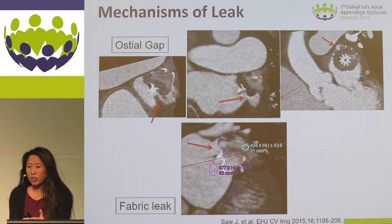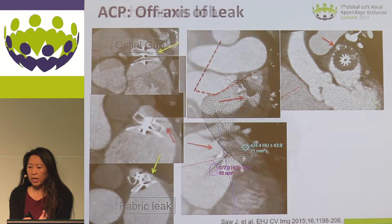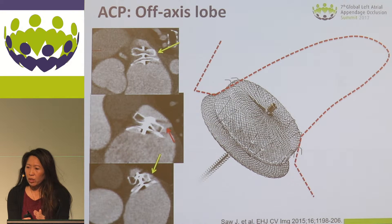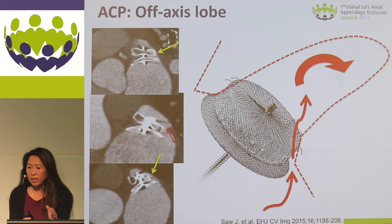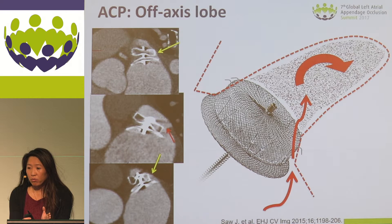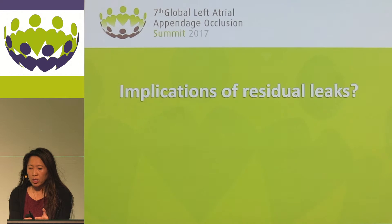With single-lobe devices like Watchman, typically the leaks are due to osteo-gaps. Very rarely, we can have fabric leak where there's incomplete endothelialization. For the ACP device as well, having a malapposition of the lobe or off-axis lobe can result in leakage of contrast from the side of the occluder into the appendage. So it's important to achieve good apposition of these devices.